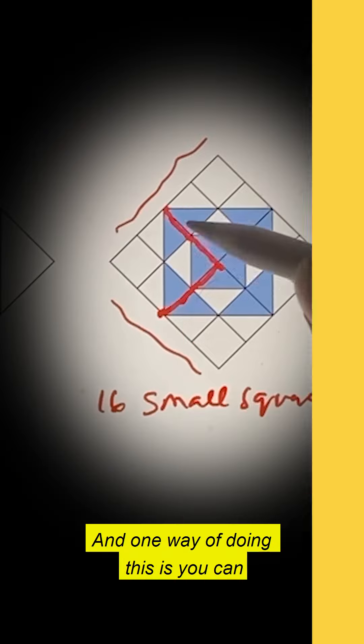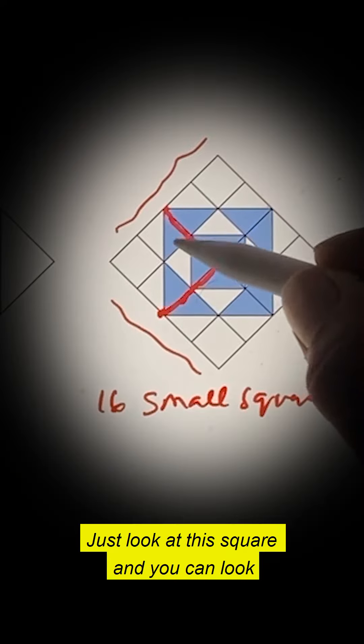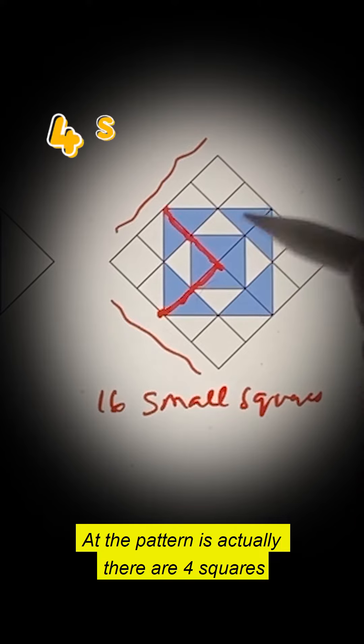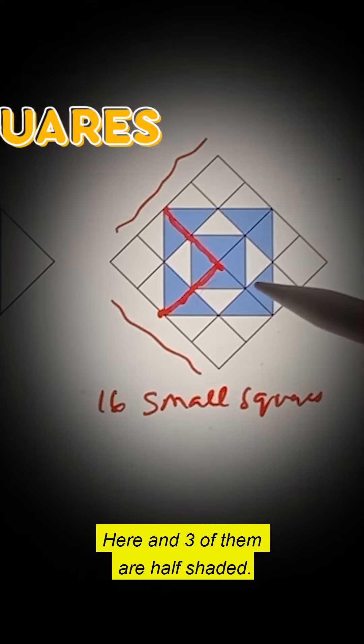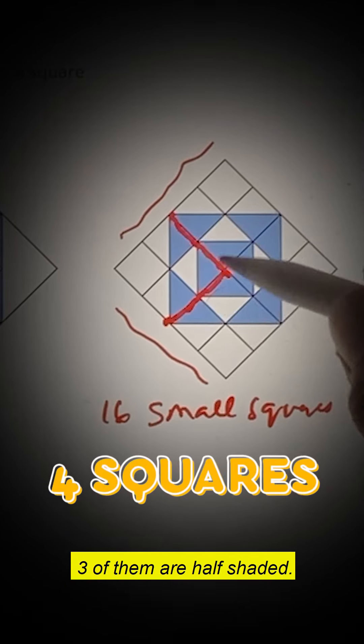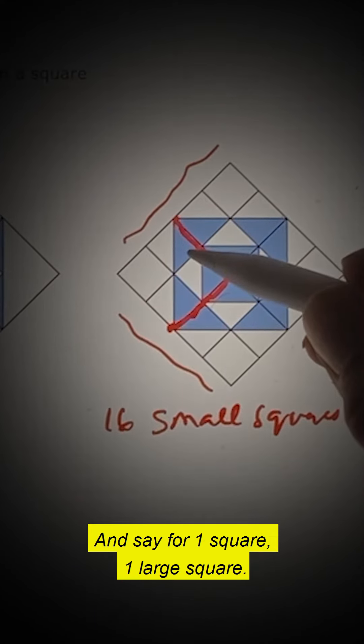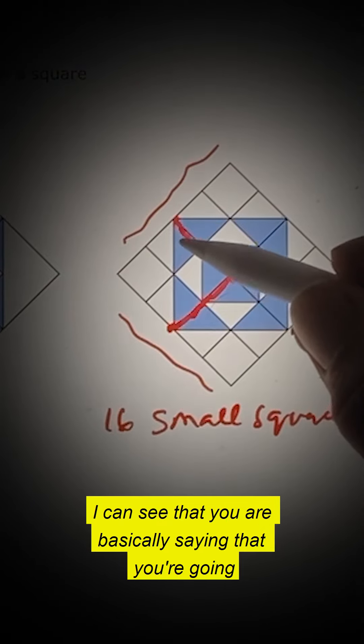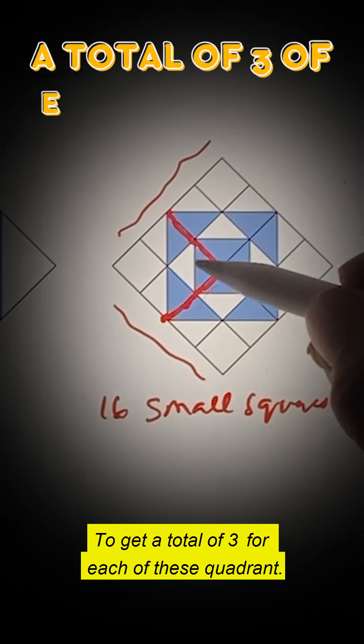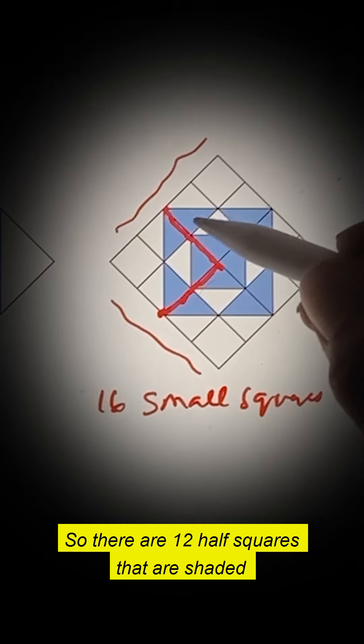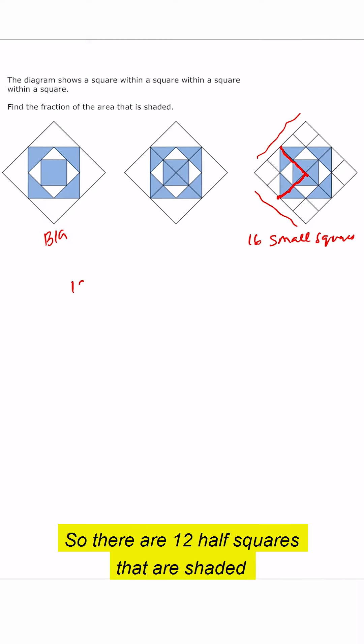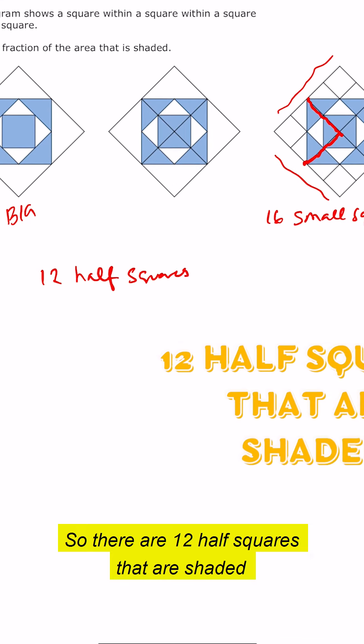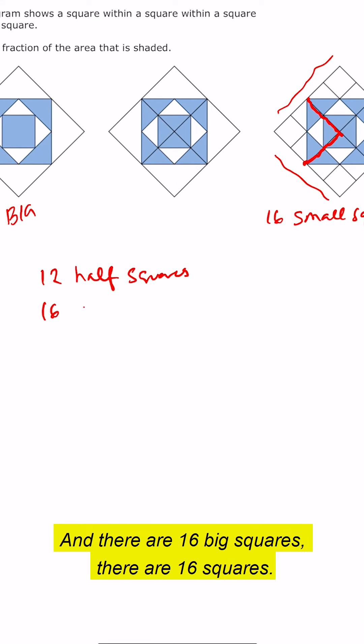One way of doing this is you can just look at this square and the pattern. There are four squares here and three of them are half shaded. There are four squares here, three of them are half shaded. So for one large square, you're going to get a total of three for each of these quadrants. So there are 12 half squares that are shaded and there are 16 big squares.